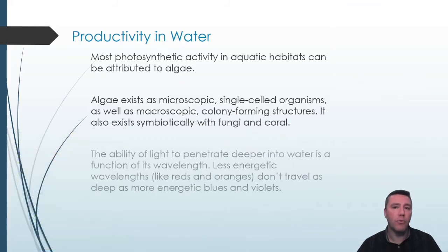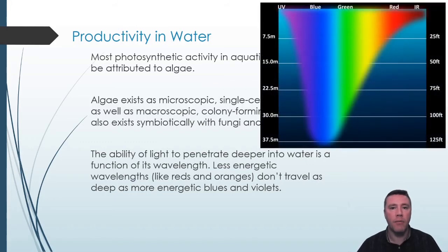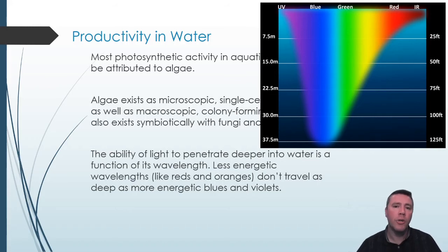While light travels relatively well through the atmosphere to land-based photosynthesizers, the same cannot be said of aquatic ones. How deep light penetrates into water is a function of its color or wavelength. The less energetic wavelengths, like reds and oranges, don't travel as deeply as the more energetic blues and violets. Producers close to the surface of water that are subjected to the entire range of visible light are like those on land and are primarily green. Therefore, the green wavelengths of light are reflected, and the red and blue wavelengths are absorbed and used by photosynthesis.